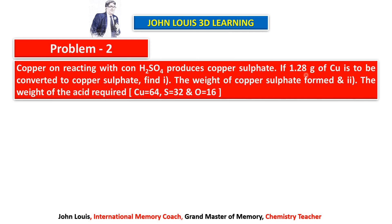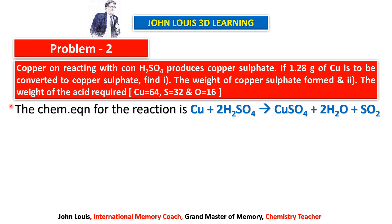If 1.28 grams of copper is converted to copper sulphate, find: (1) the weight of copper sulphate formed, and (2) the weight of acid required. The chemical equation is Cu + 2H₂SO₄ (concentrated) → CuSO₄ + SO₂ + 2H₂O. A simple rule: when any metal reacts with concentrated sulphuric acid, you get that metal sulphate plus water plus sulphur dioxide.